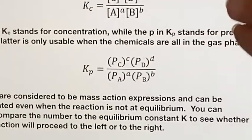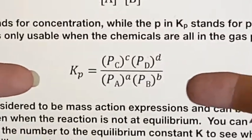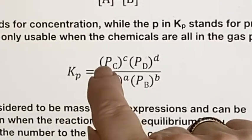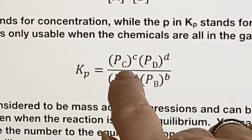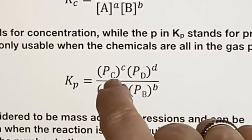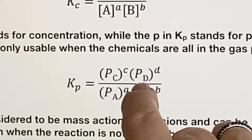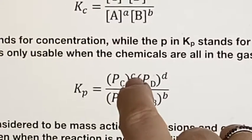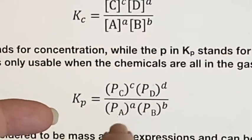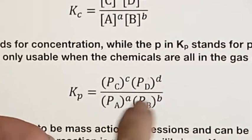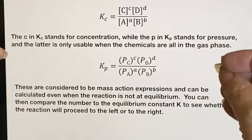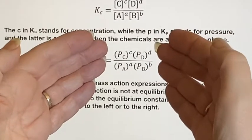If we are going to use the K sub P because they're all gases, we would use the pressure of each of the chemicals that we were talking about. So on top, you would have the pressure of each of the products raised to, again, that stoichiometric coefficient in front of them. And that would appear over the pressures of the reactants, again, raised to that stoichiometric coefficient.